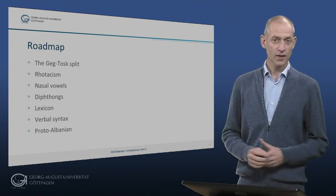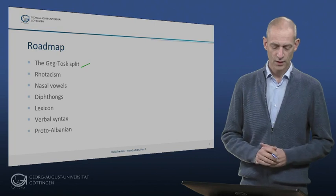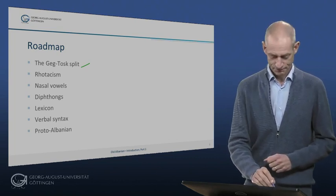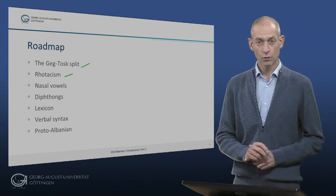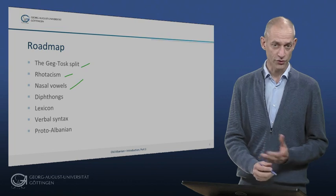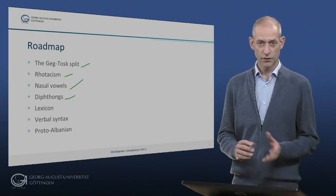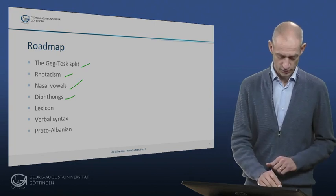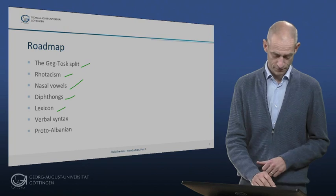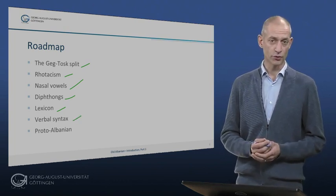We will start by looking at the split between GEG and TOSC. Then we will look at the phenomenon of rhoticism. We will discuss nasal vowels, also the diphthongs. We will discuss a few things in the lexicon. We will look at the verbal syntax. And finally I'll have some words to say on Proto-Albanian.